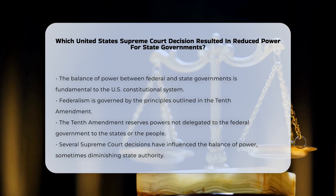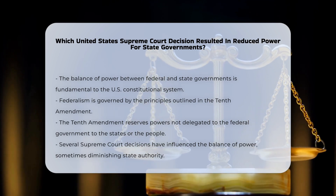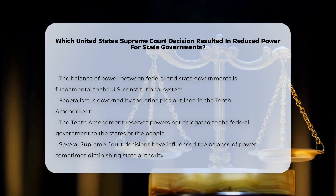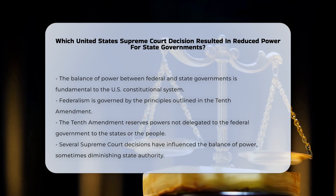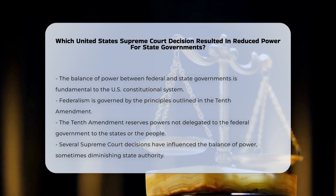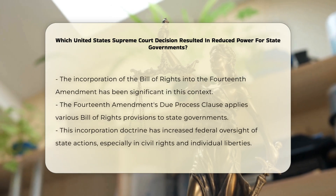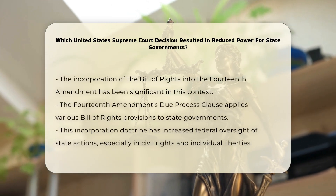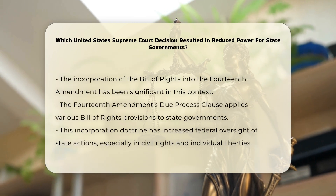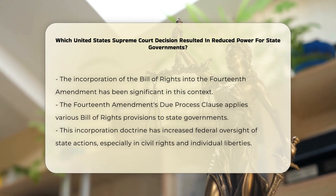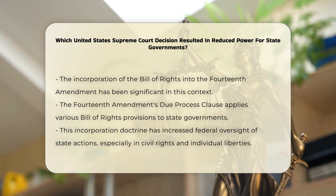However, several Supreme Court decisions have impacted this balance, sometimes reducing the power of state governments. One key area where this has occurred is through the incorporation of the Bill of Rights into the Fourteenth Amendment. This process has made certain federal constitutional rights binding on state and local governments, limiting their autonomy in these areas.